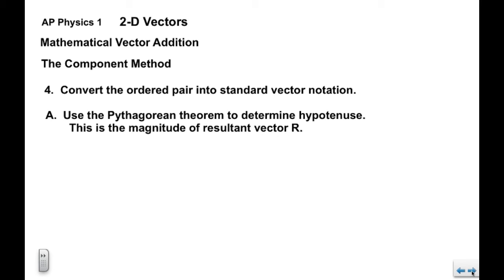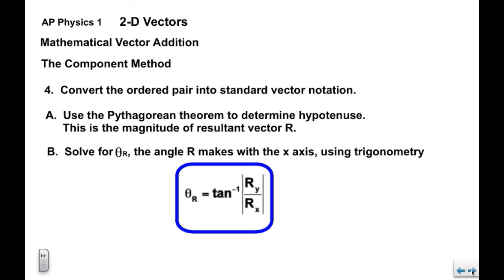We then need to convert this ordered pair, r sub x and r sub y, into a vector with standard vector notation. So to find the magnitude, again the vector r is the hypotenuse of the right triangle. We use the Pythagorean theorem to find the hypotenuse. This is the magnitude of the resulting vector r.